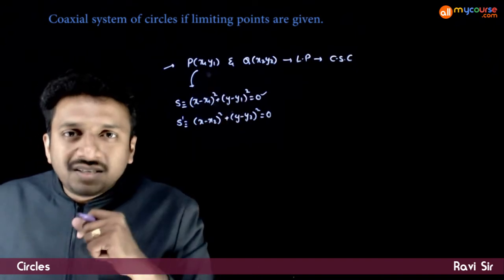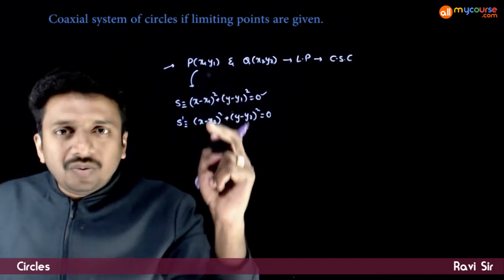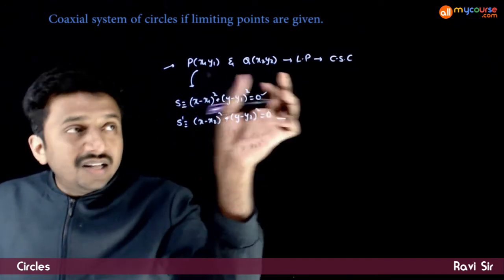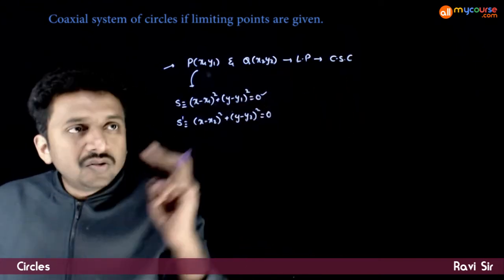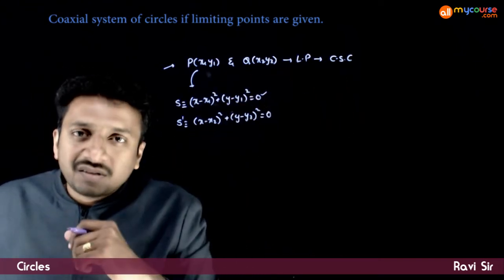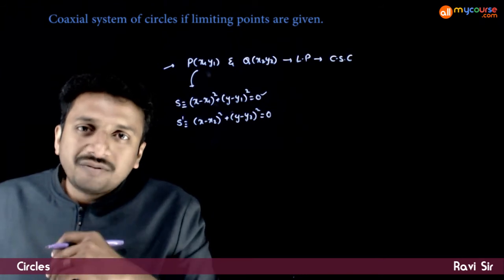As you can very clearly see, these two are the member circles of this coaxial system of circles. So once you have two of the members, what is the equation of the system?